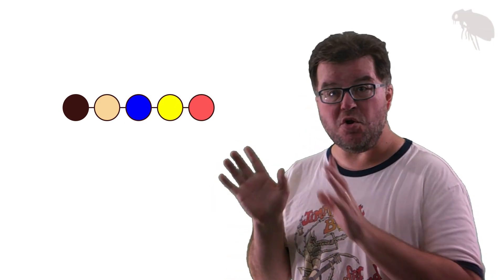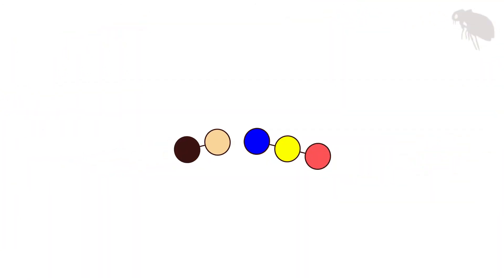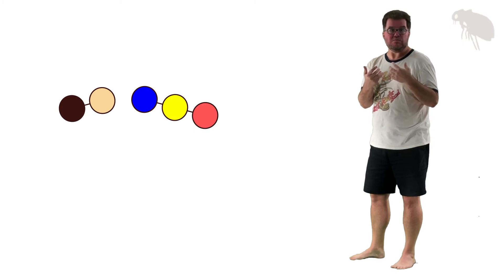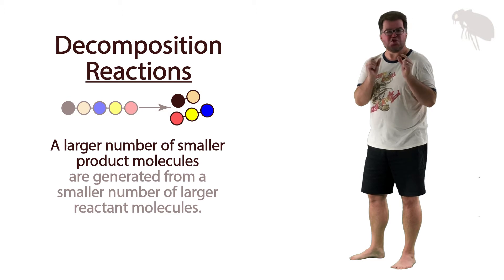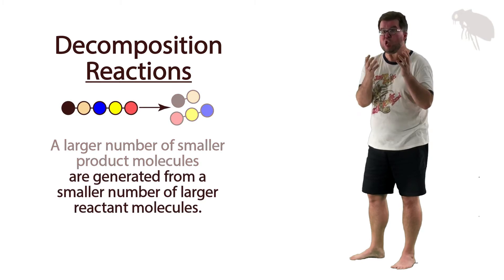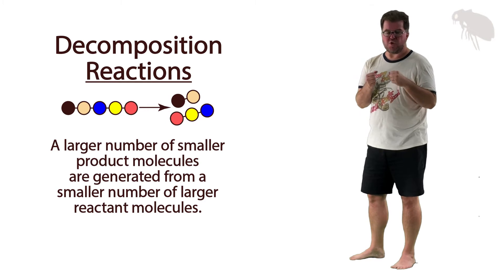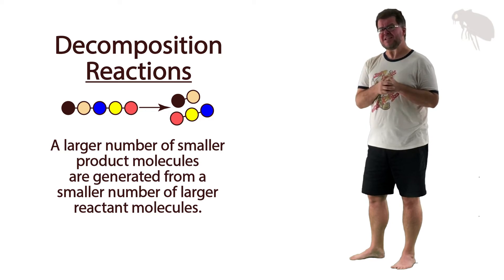For the second reaction, we start with a single larger reactant molecule. What we saw this time was a case where a single large molecule was broken into smaller but more numerous pieces. This is called a decomposition reaction — a relatively larger number of smaller product molecules are produced through the breakdown of a relatively small number of larger reactants. Decomposition reactions are all about breaking substances down, which is very important for cellular energy transfers.